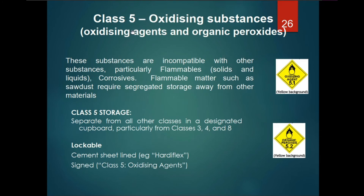Class 5 covers oxidizing substances, which may be oxidizing agents or organic peroxides. These substances are incompatible with other substances, particularly flammables, which may be solid or liquid. Crucially, flammable materials such as sawdust require segregated storage away from other materials. Class 5 storage must be separated from all other classes — especially Classes 3, 4, and 8 — in a designated lockable cement-sheet-lined cupboard, signed as 'Class 5 Oxidizing Agents.'